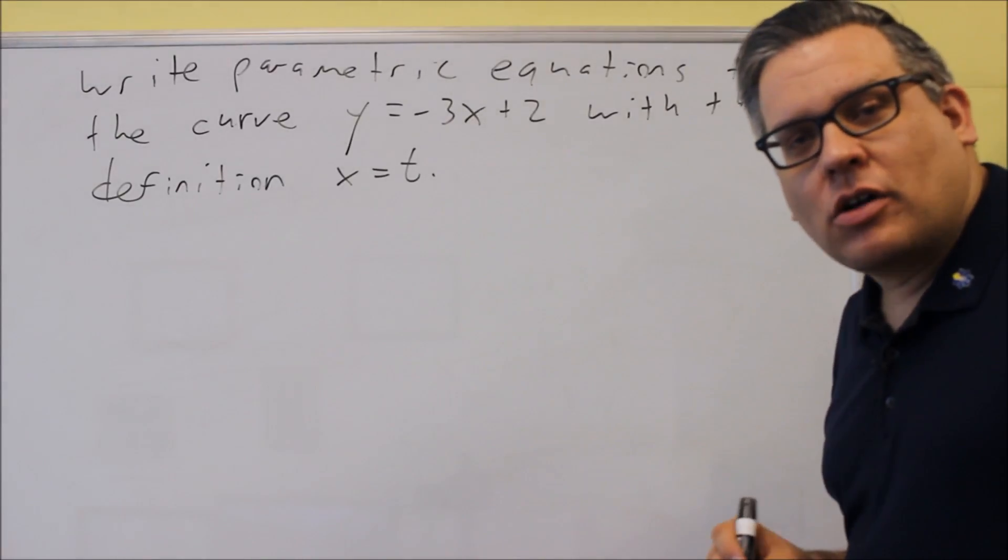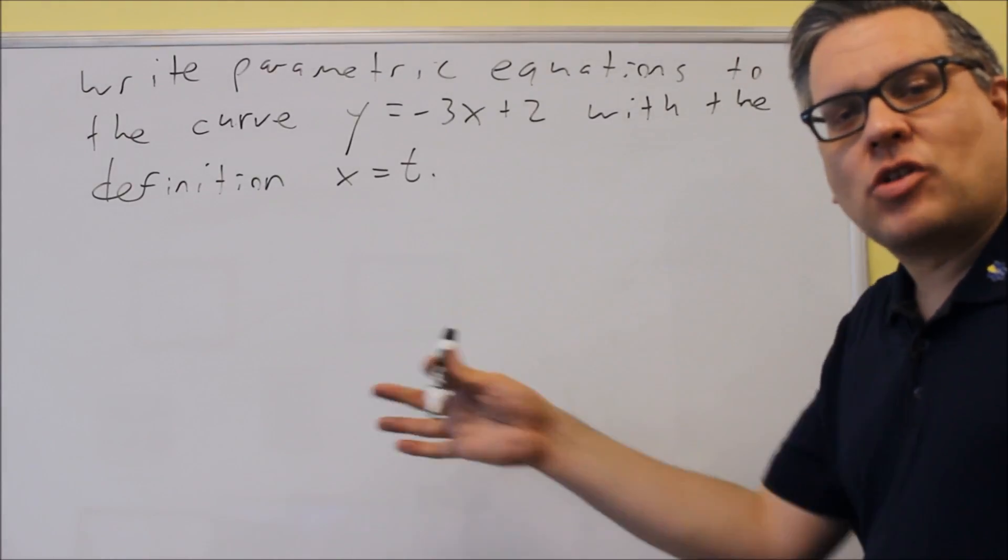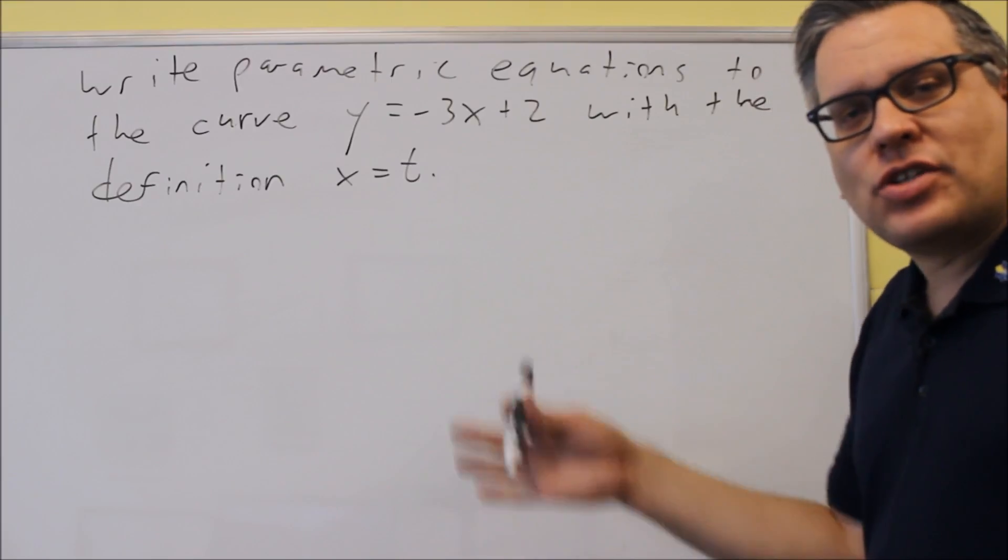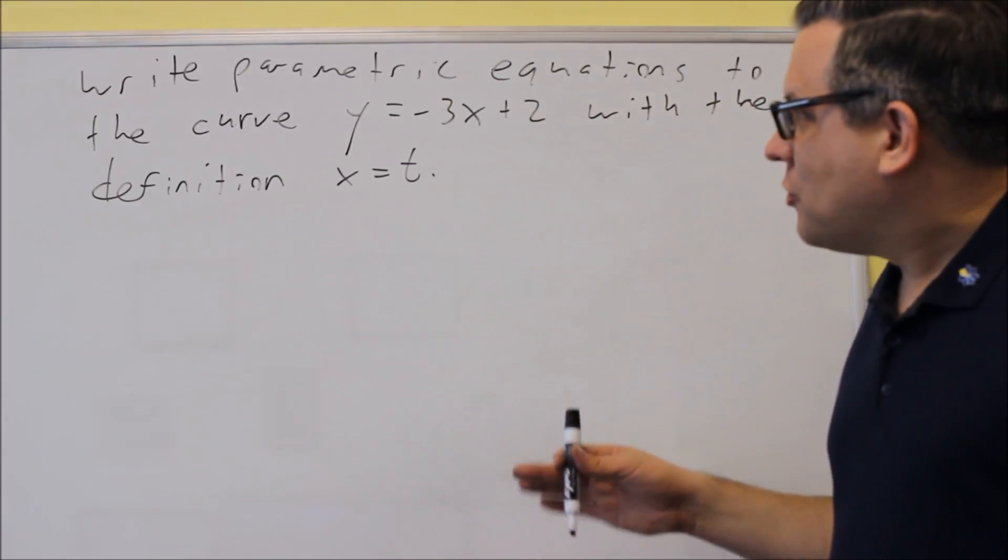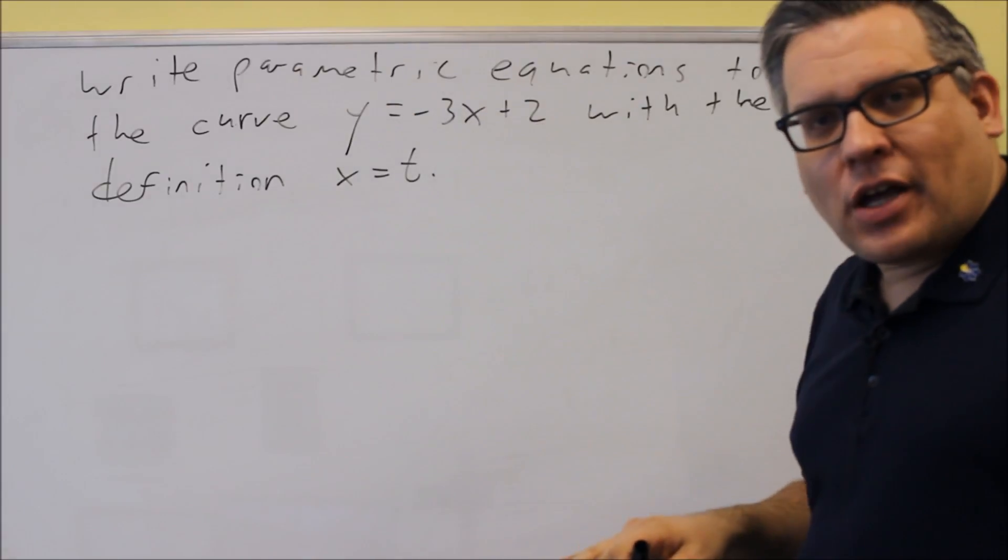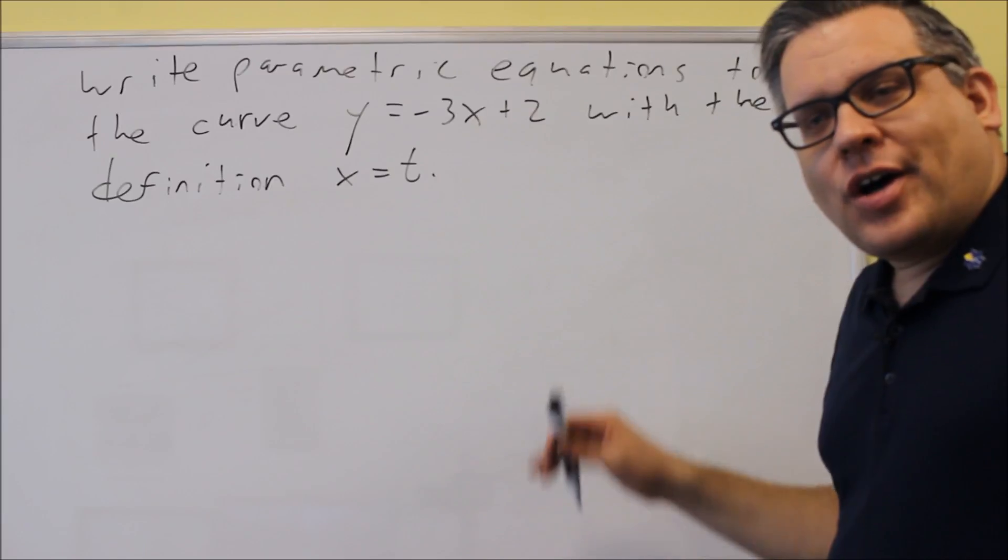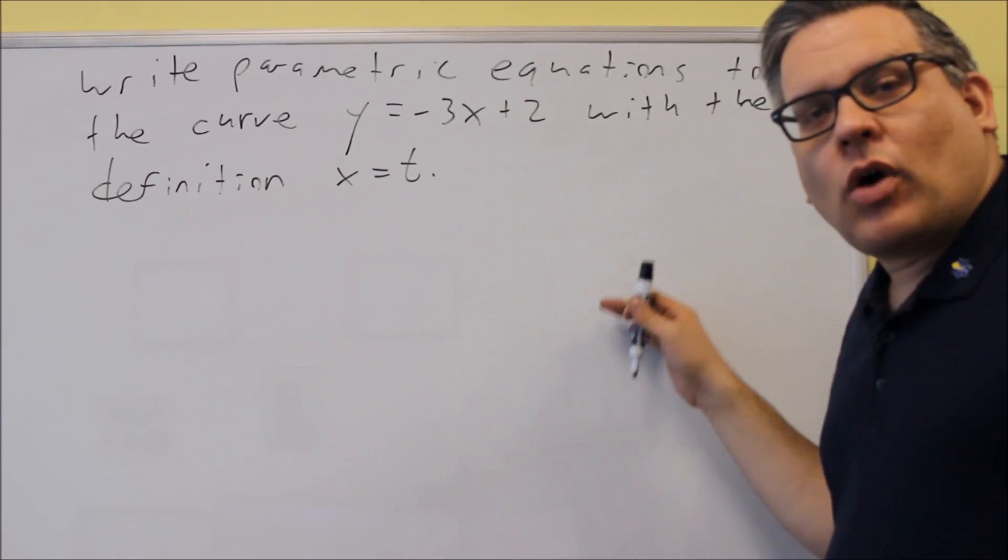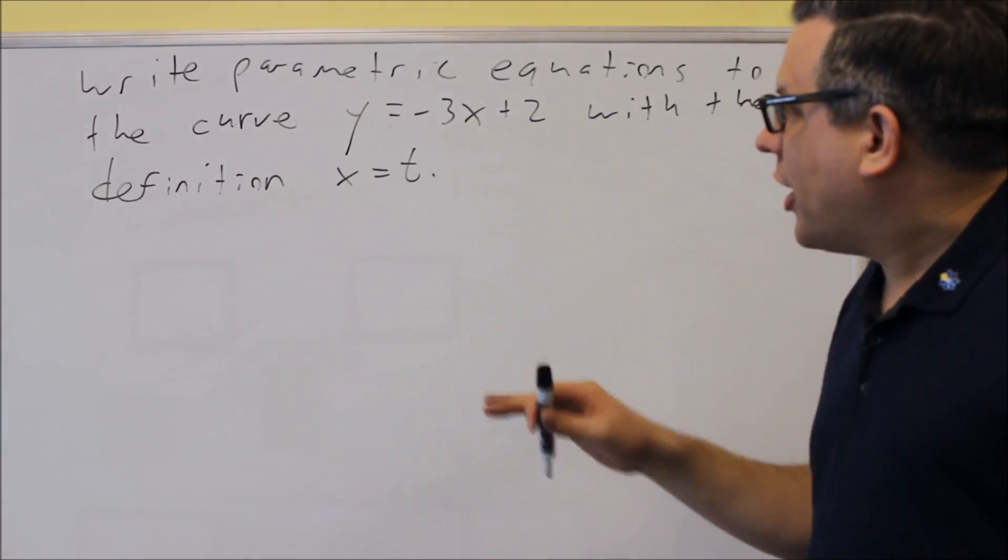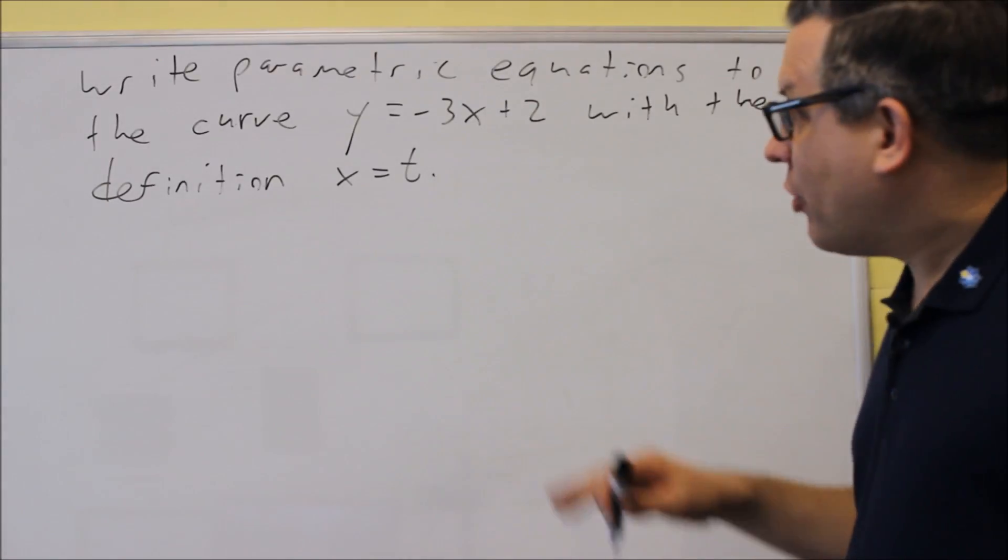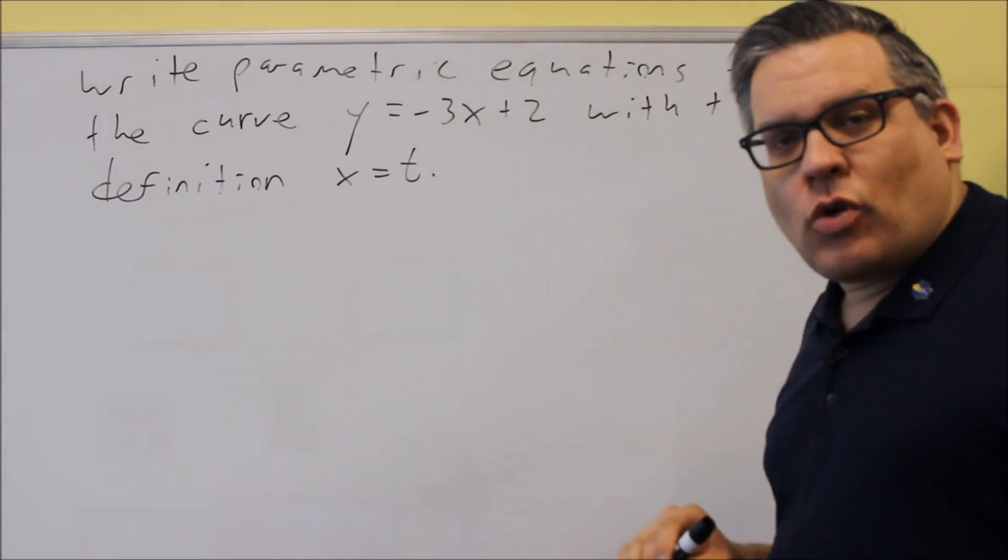We've already been talking about parametrics. We have an x equals and a y equals, and they have t as the main variable. Instead of eliminating the parameter and going from the x and y back into just a single equation with y, now we want to go the opposite direction and break it up into x equals and y equals.